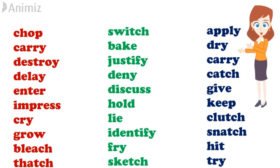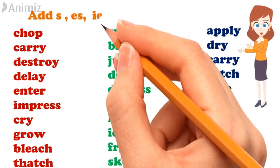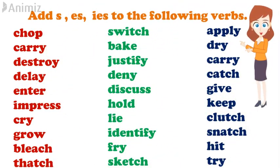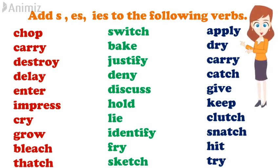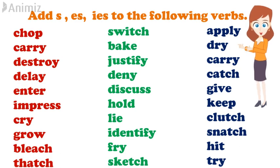Now there are some verbs given to you on the screen. Try to add S, ES, or IES, keeping the rules in mind. Tumha la kahi verbs dits hata hai. Niaman ze palan karun, tenna S, ES, ki waa IES prattye zhodnye cha prayat na kara. Thank you.